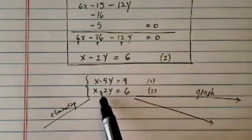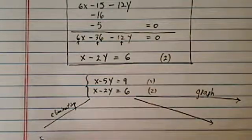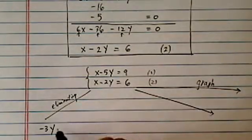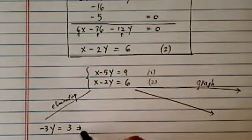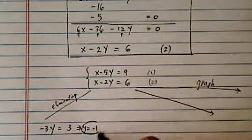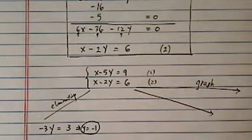So let's try it. This minus 5y minus minus 2y, that becomes minus 3y, equal to 3. So, y is equal to minus 1. Pretty easy to get that.